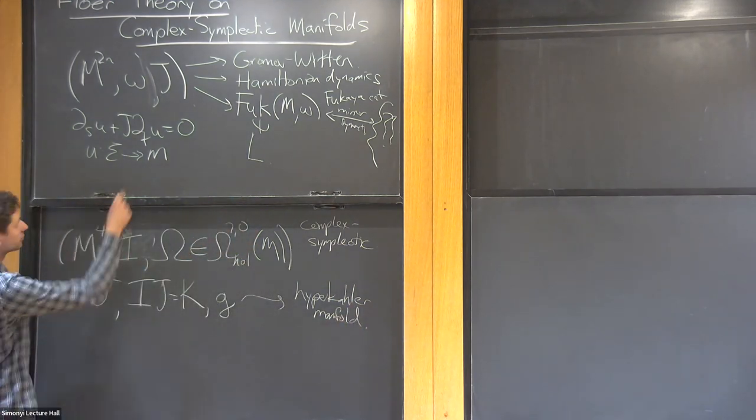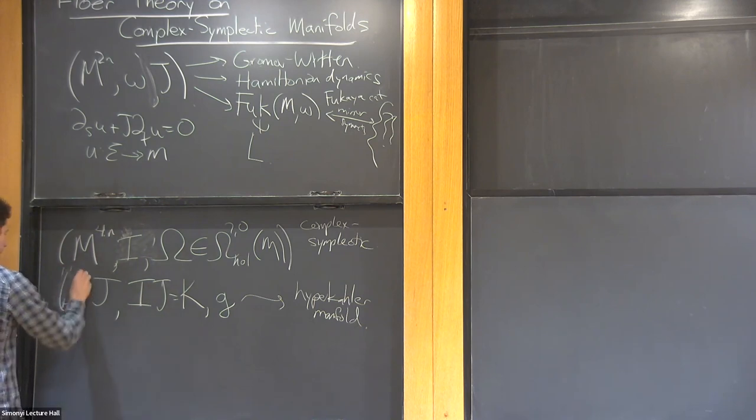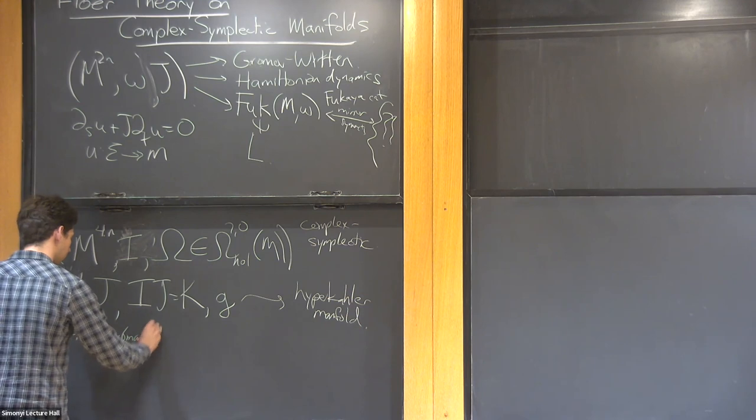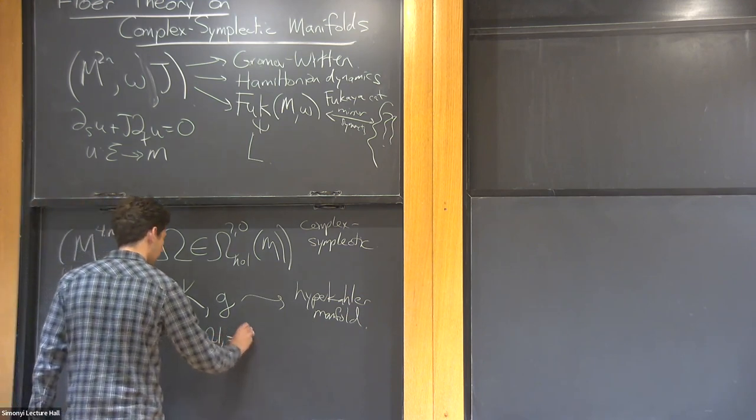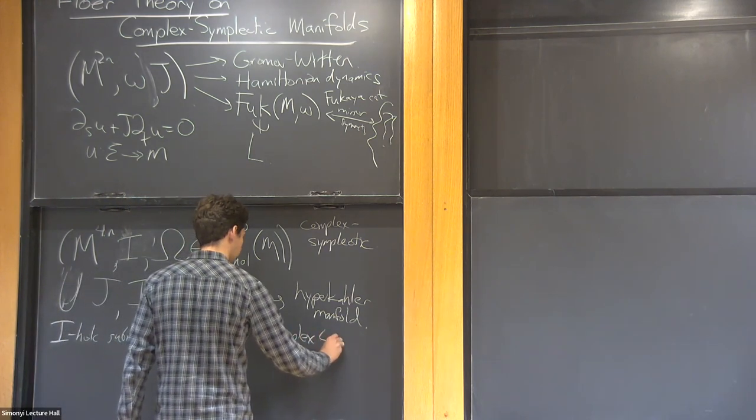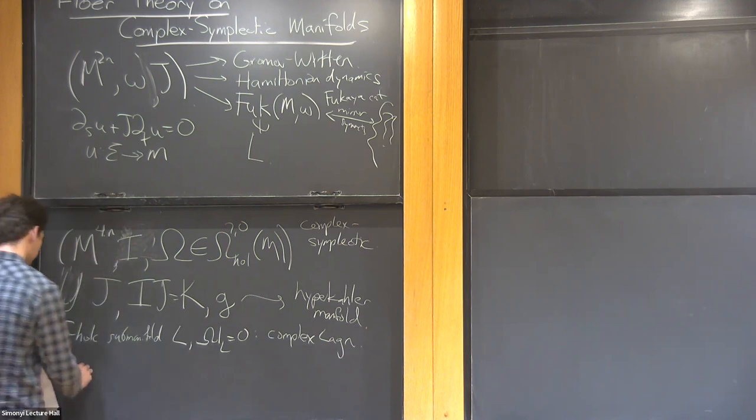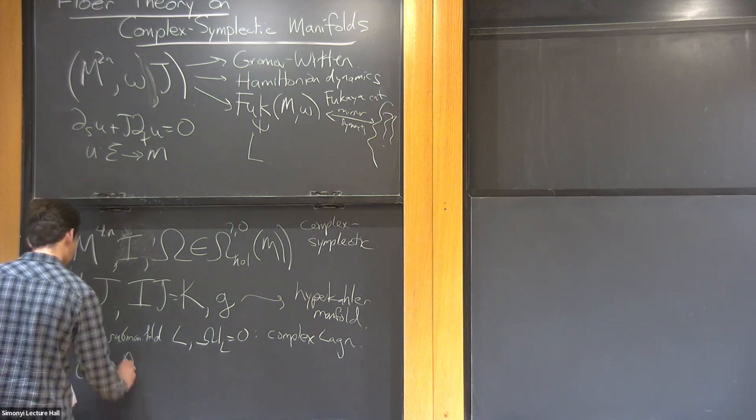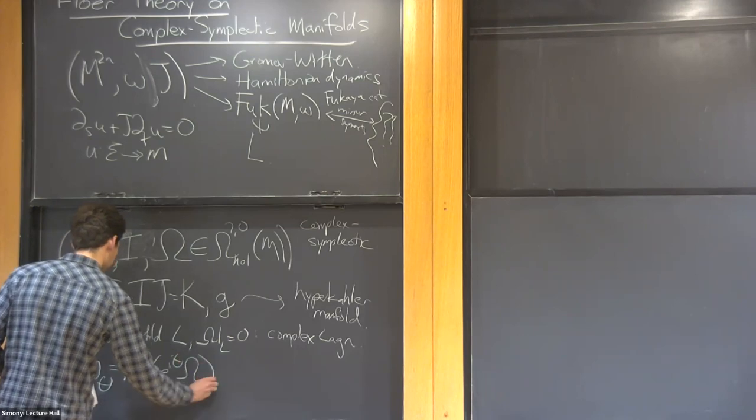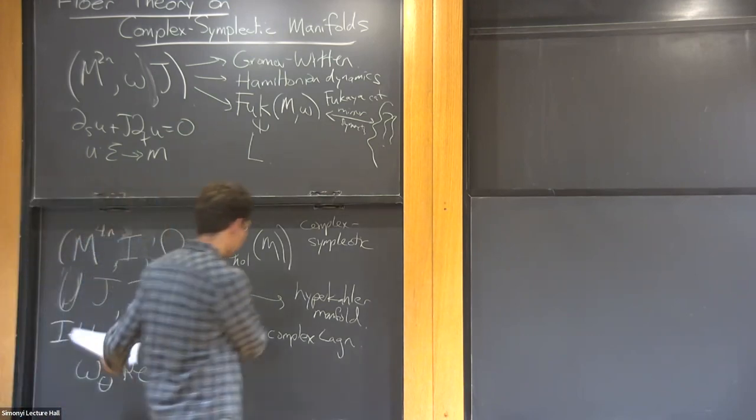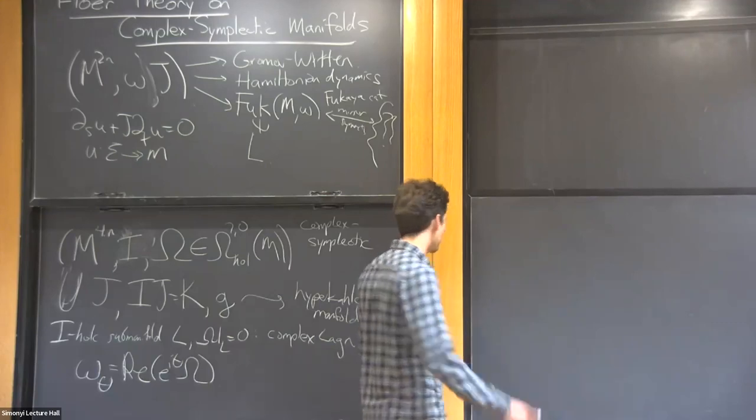There's also a natural distinguished sub-object here. You can have a complex Lagrangian, so that's a holomorphic submanifold L such that omega restricted to L is zero. This complex Lagrangian is a real Lagrangian with respect to a circle of symplectic forms.